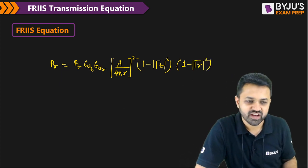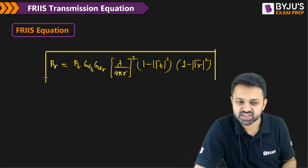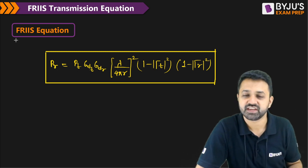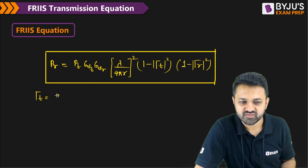So that is the final formula you will get whenever you will have the reflection efficiency in your picture. In the transmission line, if there is a reflection efficiency, then that is nothing but gamma t.